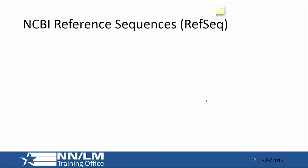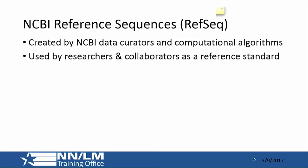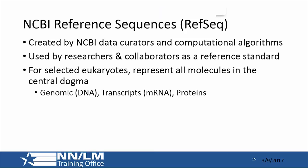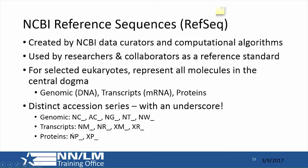The RefSeq project is specific to NCBI. Records are created by data curators and computational algorithms and are used by researchers as reference standards. For selected eukaryotes, RefSeq represents all molecules of the central dogma. Genomic accession numbers begin with specific prefixes, mRNA transcripts with their own set of prefixes, and proteins are NP or XP. When you see an X prefix — XM or XP — that represents computationally predicted models derived from algorithms.